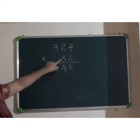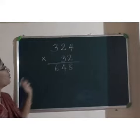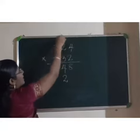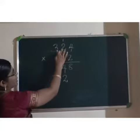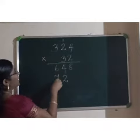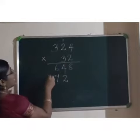Next, we want to multiply with this number 3. We know that 3-4s are 12. So, we have to write 2 here and carry over 1. And 3-2s are 6 plus 1 is 7. And 3-3s are 9.